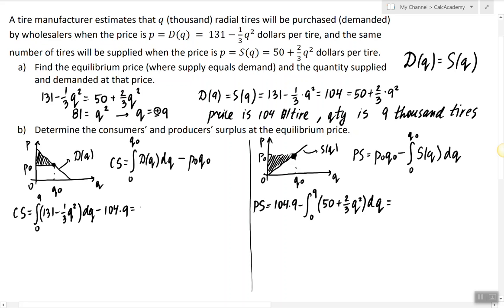So the anti-derivative of the first integral will be 131q minus one-ninth q cubed evaluated from 0 to 9 minus 936.